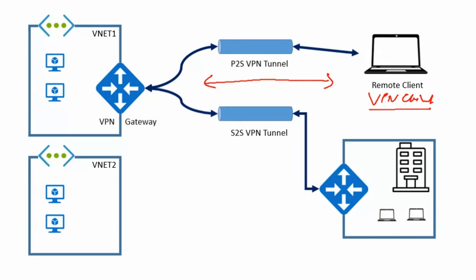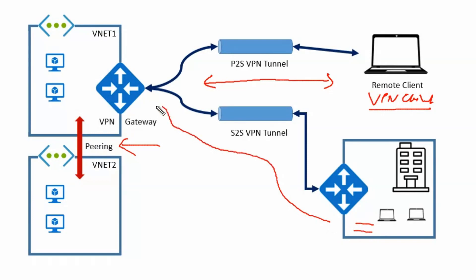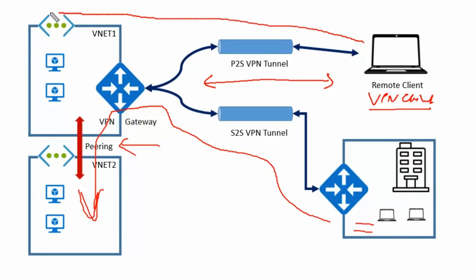You verify that you can connect to VNet2 from the on-premises network. We configured the VNet1-to-VNet2 peering and verified it is working from the remote site — meaning we can connect to VNet1 and from there reach any resource in VNet2. However, Client1 is able to connect to VNet1 but is not able to reach VNet2.